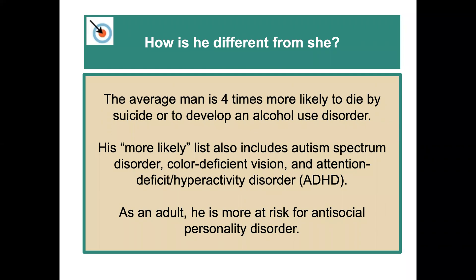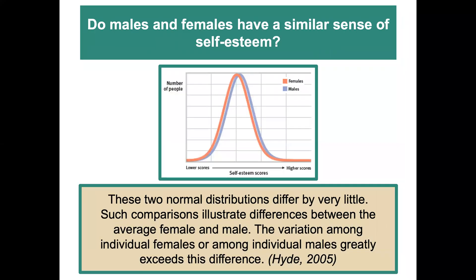The average man is four times more likely to die by suicide or to develop an alcohol use disorder. He is more likely to be included in a list of individuals that have autism spectrum disorder, color deficient disorder, and ADHD. As an adult, males are more likely to be at risk for antisocial personality disorder.